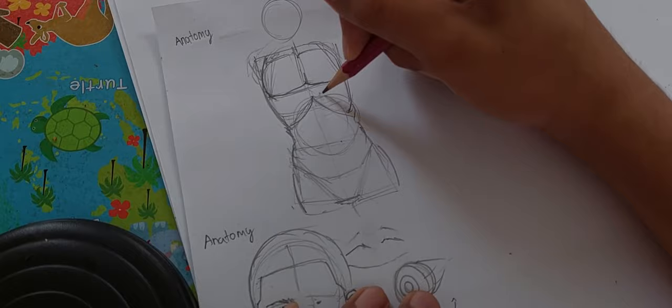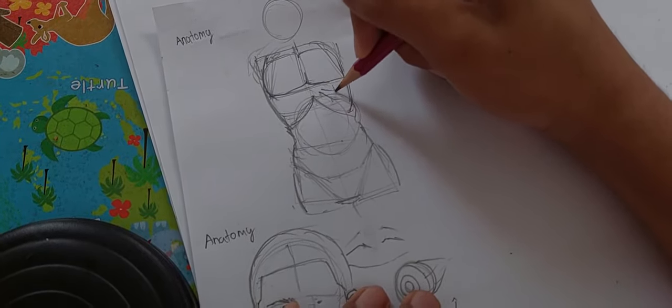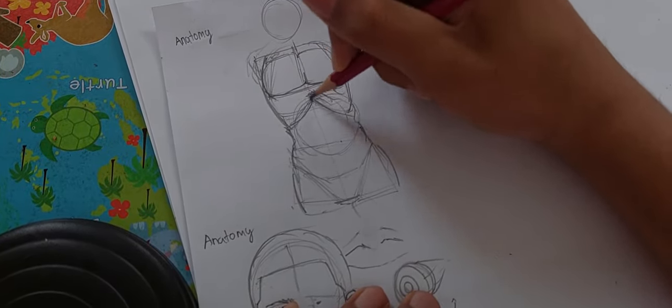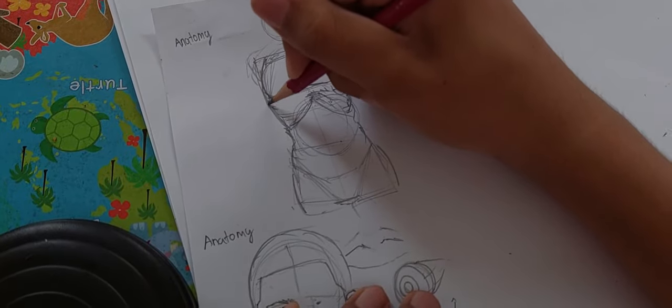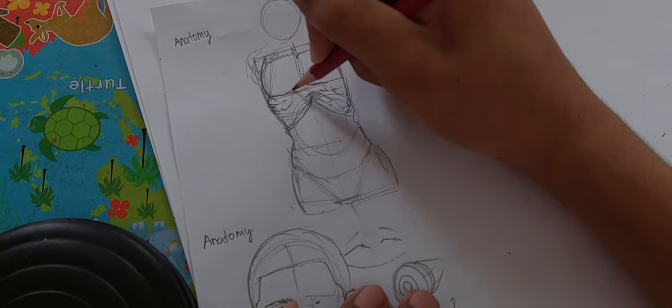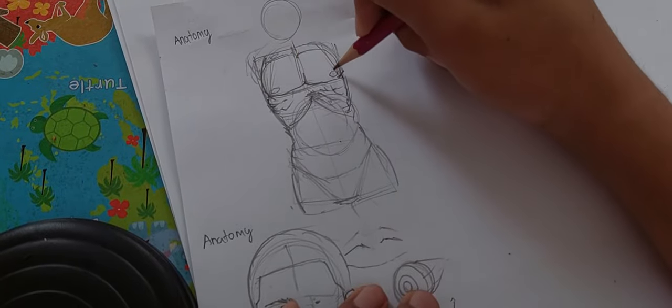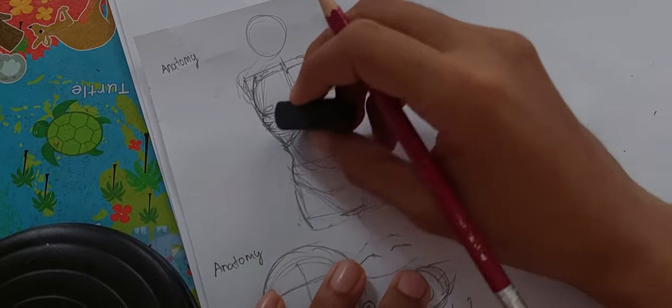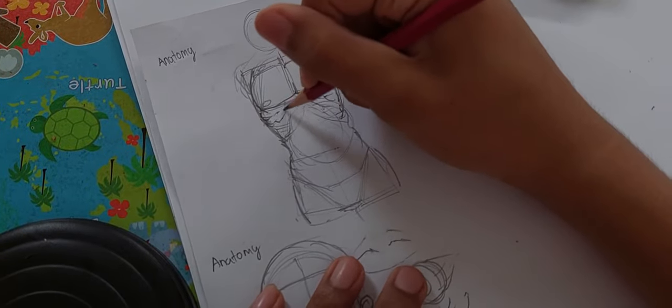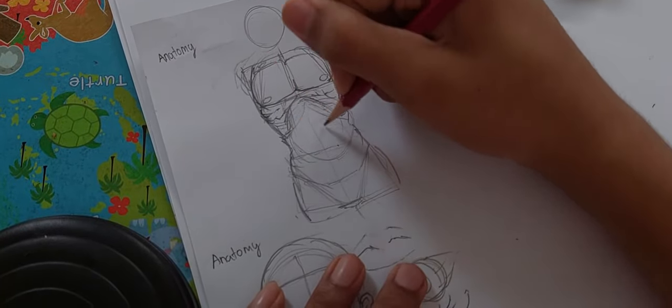And after that, you can draw some ribs. Just some, it just some of your ribs shown on your sides. This gonna be his tilt over here. As you see.